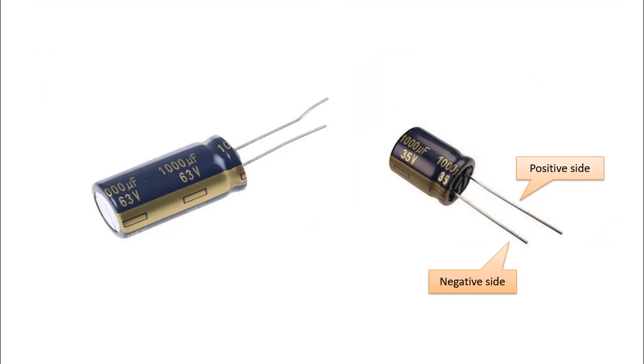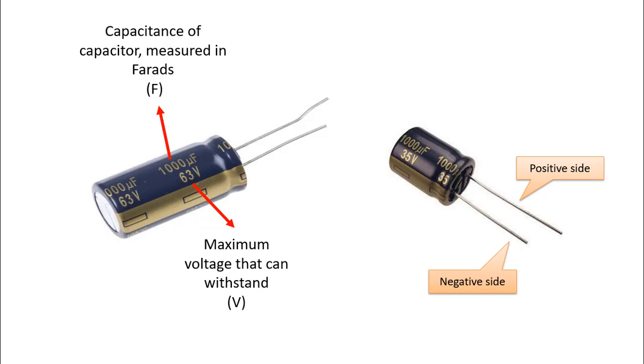Capacitors have a capacity value and voltage values on them. Capacity value is the degree to which electrons are stored. So, it shows how much more electrons it can store.